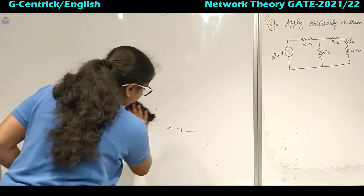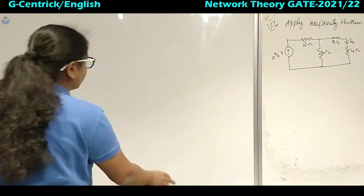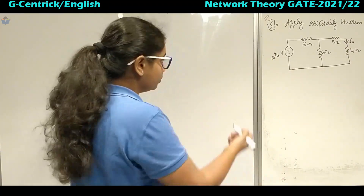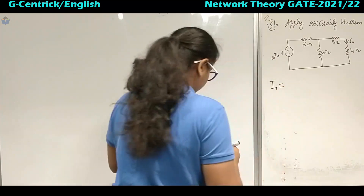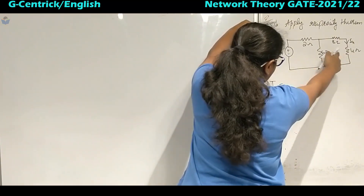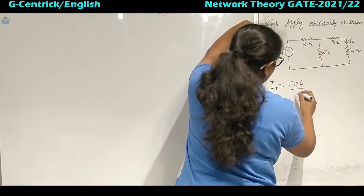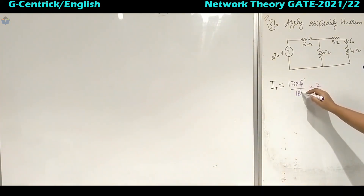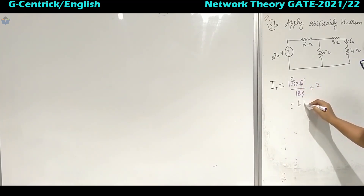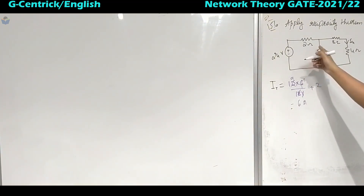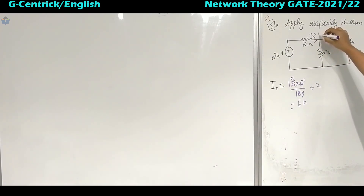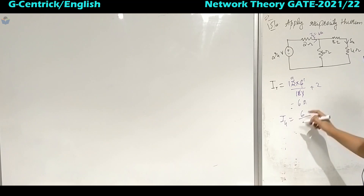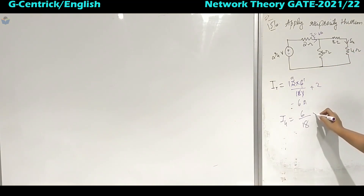To find I4, the current in the 4 ohm resistor, we need to know the total current in the circuit. To find total current, reduce the circuit: 8 and 4 are in series giving 12, and 12 in parallel with 6. You get 4 ohms, which is in series with 2 ohms, giving R equivalent of 6 ohms. Then I total will be 24 by 6, which is 4 amperes. Using the current division rule we can find I4.